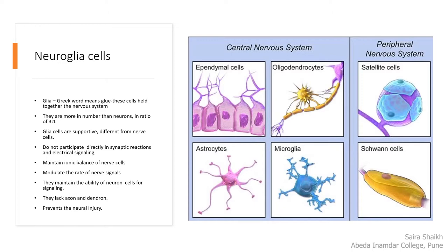Glia cells are supportive. They do not participate directly in synaptic reaction or electrical signaling. They maintain the ionic balance of the nerve cell and also modulate the rate of nerve signals. They have the ability to maintain signaling. They do not have axon and dendron-like structures. They prevent injury of the neural tissue.